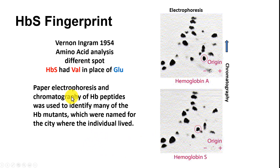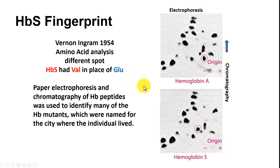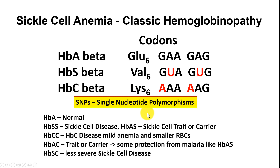Ingram found that HBS had a valine, whereas the normal individual's peptide had a glutamic acid, showing it was a one-amino acid change — the first indication of that. Later on, the genes were determined. HBA has a glutamic acid at position 6 in the beta chains.